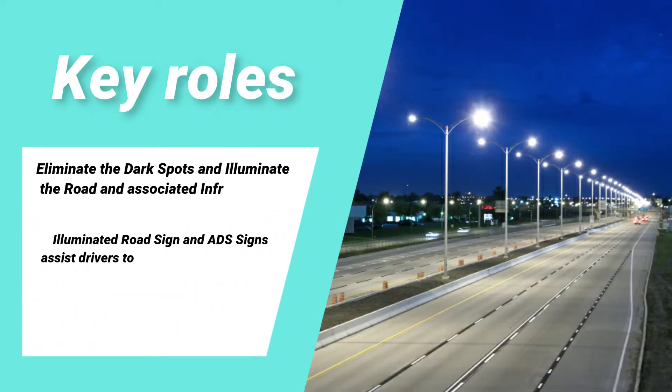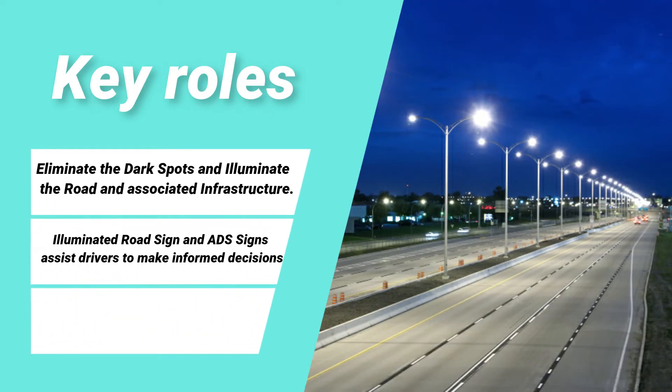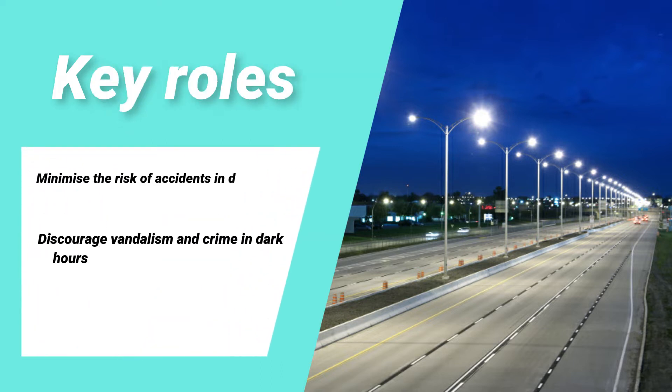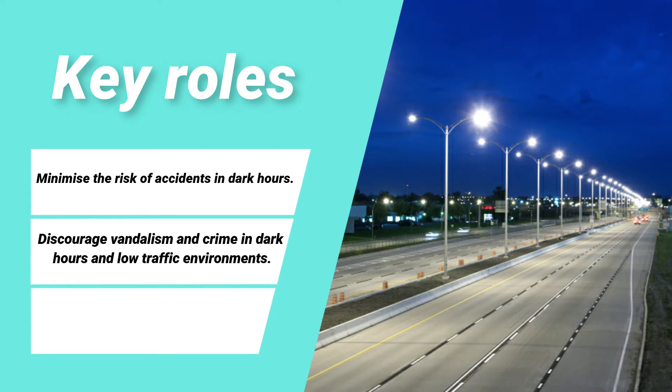Following are the key roles that road lights play: eliminate dark spots and illuminate the road and associated infrastructure; illuminated road signs and aid signs assist drivers to make informed decisions; minimize the risk of accidents in dark hours; and discourage vandalism and crime in dark hours and low-traffic environments.